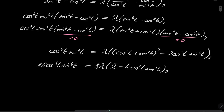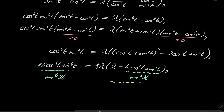Now using the identity sin(2α) = 2cos(α)sin(α), the left side becomes sin⁴(2t), and the expression in parentheses becomes 2 − sin²(2t). Since this parenthesis is always greater than zero, we can divide by it. We obtain: 8λ = sin⁴(2t) / (2 − sin²(2t)).